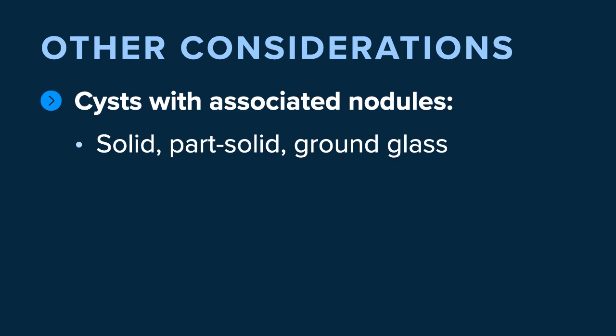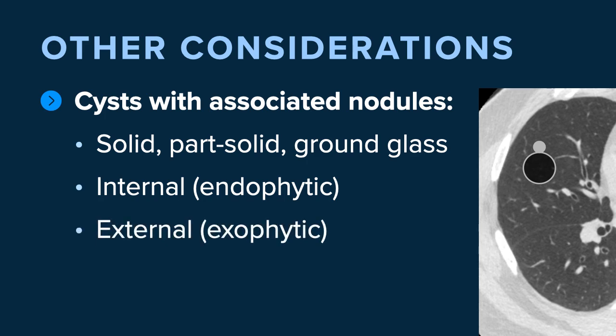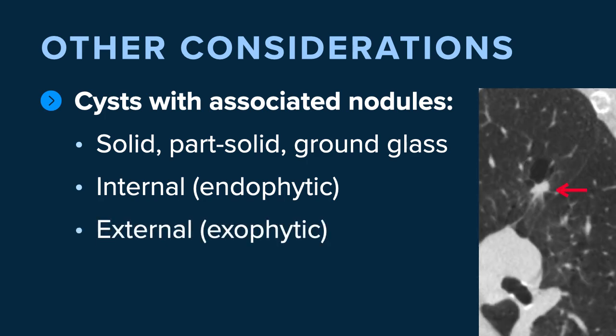There are some other considerations. Everything we've talked about so far applies to atypical cysts with wall thickening, nodularity, or multilocular cysts. But what about cysts that have nodules arising adjacent to the wall rather than directly within the wall? These nodules can be solid, part solid, or ground glass. They may be internal to the cyst — an endophytic nodule — or they could be external, an exophytic nodule. Here's an example of an exophytic nodule: we see the cystic component with a nice discrete soft tissue nodule adjacent to the cyst.